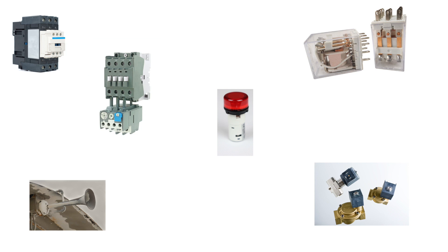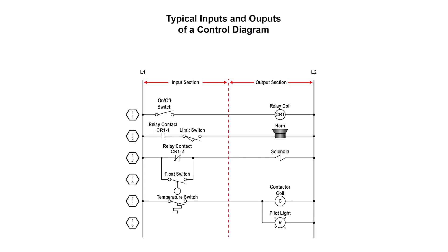Motor control circuits can have one or more inputs controlling one or more outputs. The example shows typical input and outputs of a control ladder diagram. The relay is energized once the switch is closed and will open CR12 and close CR11. The horn will energize once both the CR11 contact and limit switch are in the closed position. The solenoid is energized when CR12 or float switch are closed. Once the temperature reaches its set point and closes, the contactor will energize and close its contacts. At the same time, the pilot light will energize and turn on.